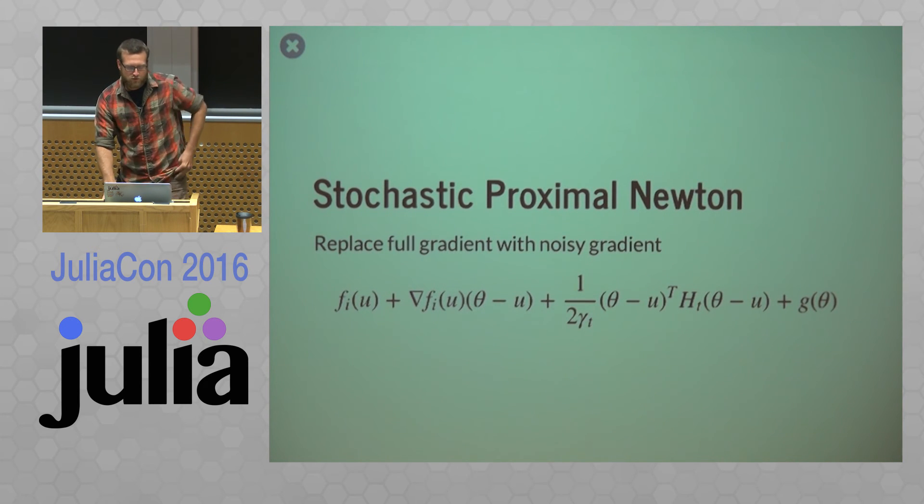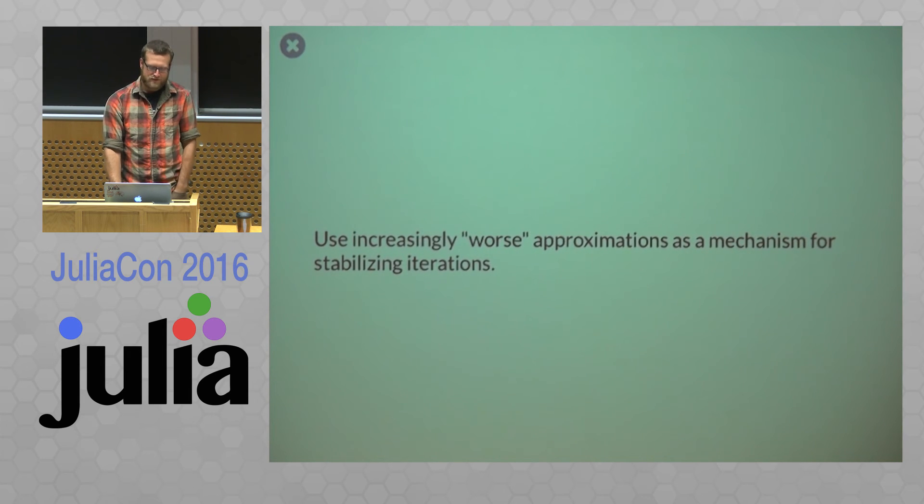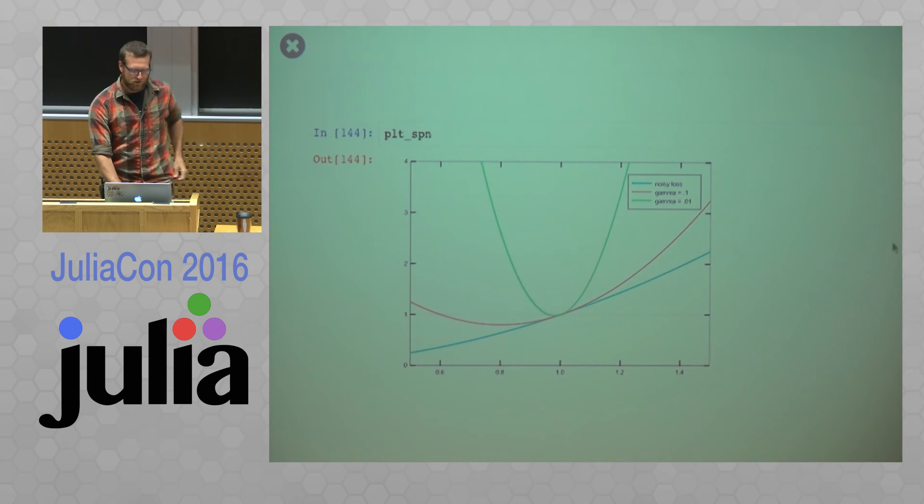Now stochastic proximal Newton, so now we're just replacing that full gradient with some noisy gradient. So we had f, which was the mean of these functions, fi's before. Now we have used the fi's directly in this. And so the process of this, so we're essentially using worse approximations as a mechanism for stabilizing these iterations.